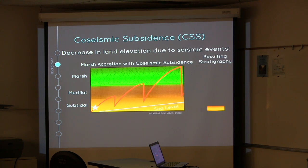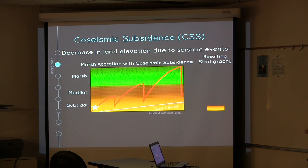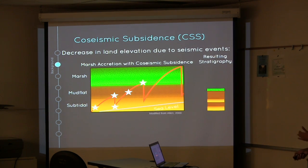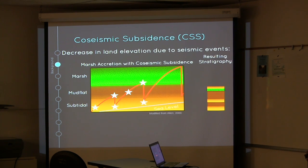If we start at sub-tidal, the marsh will accrete normally between events — sub-tidal will move up to mudflat. However, in the event of an earthquake, it will decrease in elevation back down to sub-tidal. From here, we would again have normal marsh accretion to mudflat and then to marsh. When another event occurs, it will change the elevation and drop it back down to the sub-tidal environment, and so on as more events occur.